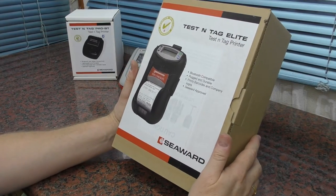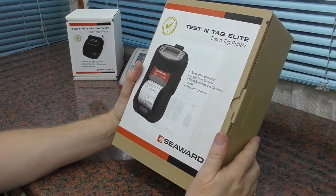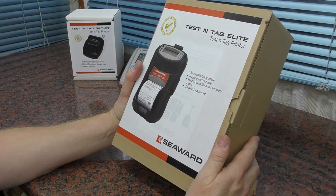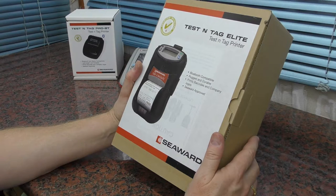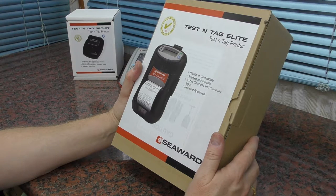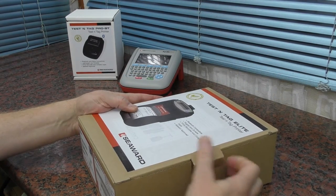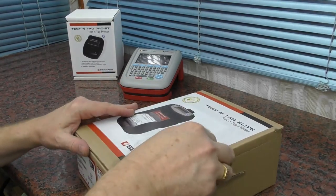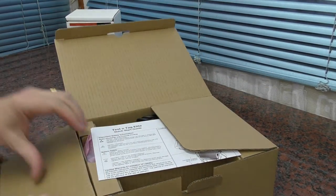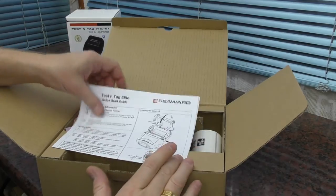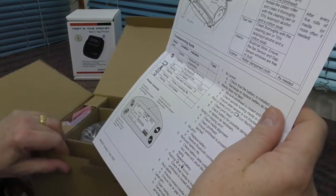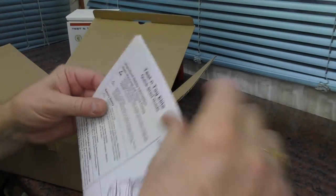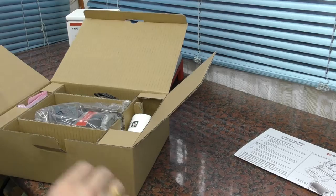Right, so we're back again. We're going to do a quick unboxing of this Seaward Test and Tag Elite. It's a Bluetooth compatible printer and this one prints barcodes, company logos, etc. So we've got the usual quick start guide. No doubt the full manual is available online, as seems to be the case with all of Seaward's equipment.